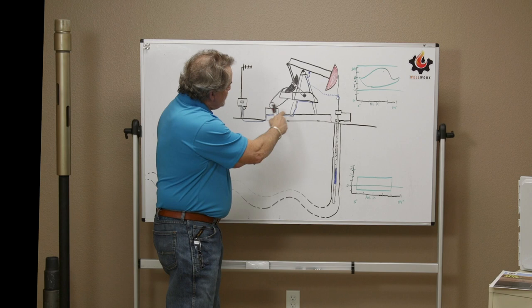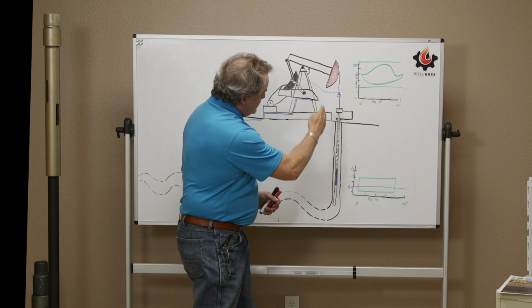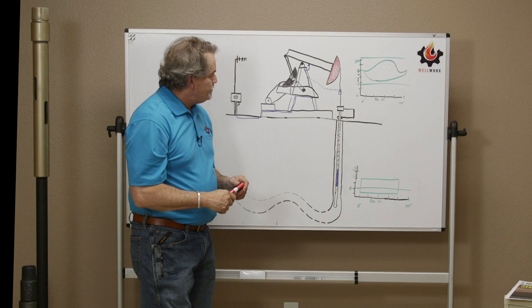So we energize the motor, rotate the high speed gear. Pumping unit goes up and down. Polish rod goes up and down. Rod string moves up and down. And again, the whole job of the pumping system is to reciprocate the plunger on the pump and lift the fluid up to the surface.